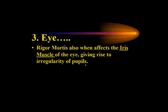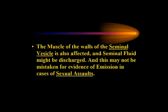Since rigor mortis acts on both skeletal and smooth muscles, it also affects the iris muscles of the eye, giving rise to irregularity of the pupils. The muscles of the walls of the seminal vesicles are also affected, and seminal fluid might be discharged. This should not be mistaken for evidence of emission in cases of sexual assault.